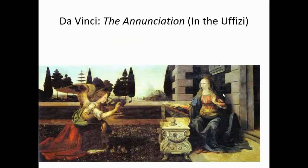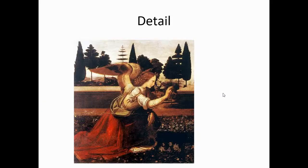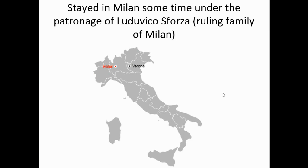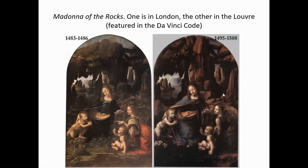There is the detail of Leonardo's angel. We also have the Annunciation, in the Uffizi, depicting a famous moment in the New Testament. Then in northern Italy, Milan, under the patronage of the Sforza family, Leonardo created many works including the famous Madonna of the Rocks — one version in London, the other in the Louvre in Paris, and featured in the Da Vinci Code. The two versions look similar but differ in details like the cross, halo, and figures, while the rocks in the background give the painting its name.